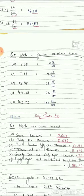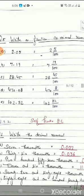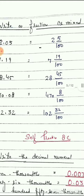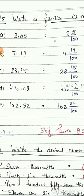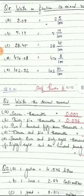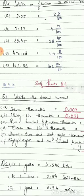Suppose you have the number 2.05. The left part is the whole part and the right side is the decimal part. We can write it as the mixed number 2 and 5 upon 100. Another example: 28.45 can be written as 28 and 45 upon 100.